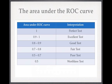Some people have tried to put an interpretation on the area under the curve. An area of one represents a perfect test, and 0.5 represents a worthless test no better than flipping a coin. Values in between have been assigned descriptors ranging from excellent through to good, fair, or poor.